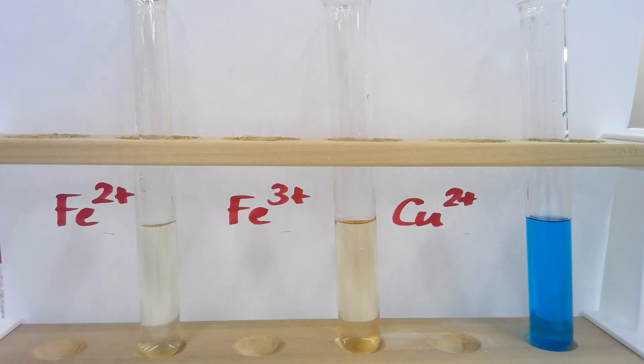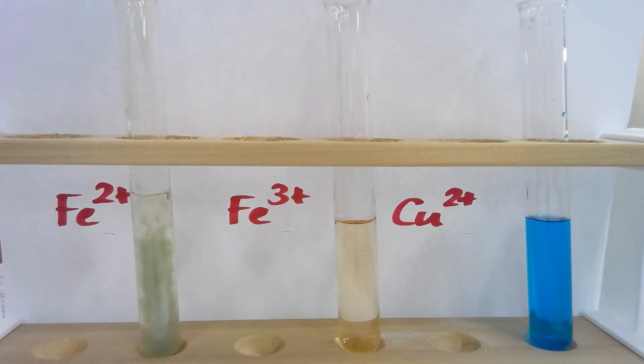What I'm going to do is add some sodium hydroxide solution, and we should end up making some colored precipitates. First of all, the Fe2+, and as you can see, we just made a green colored precipitate.